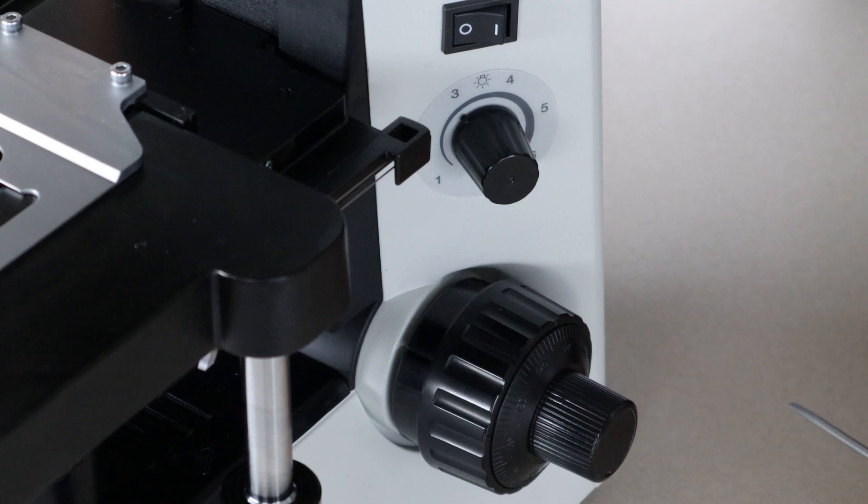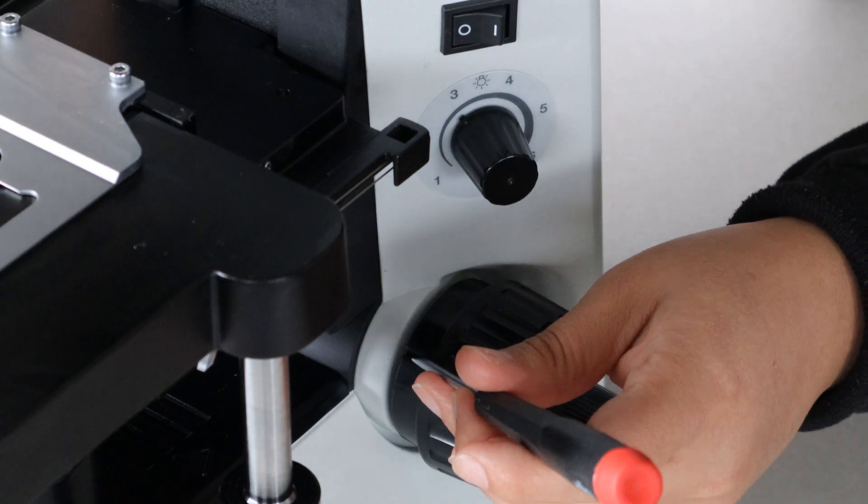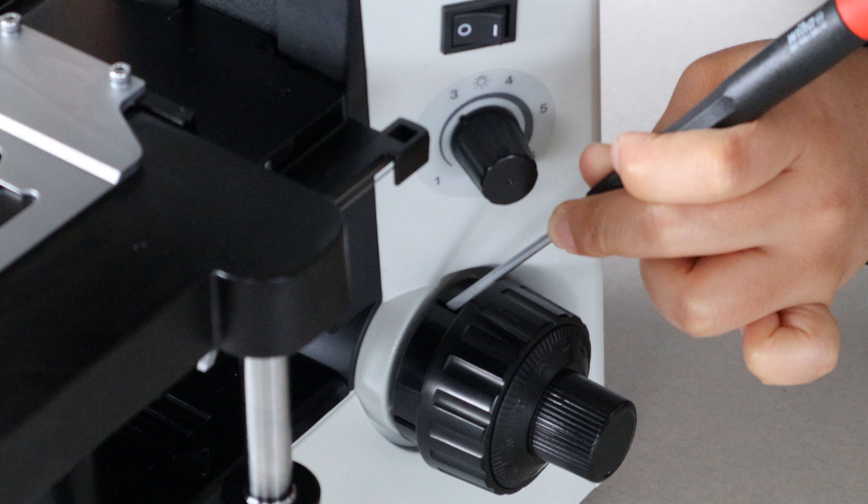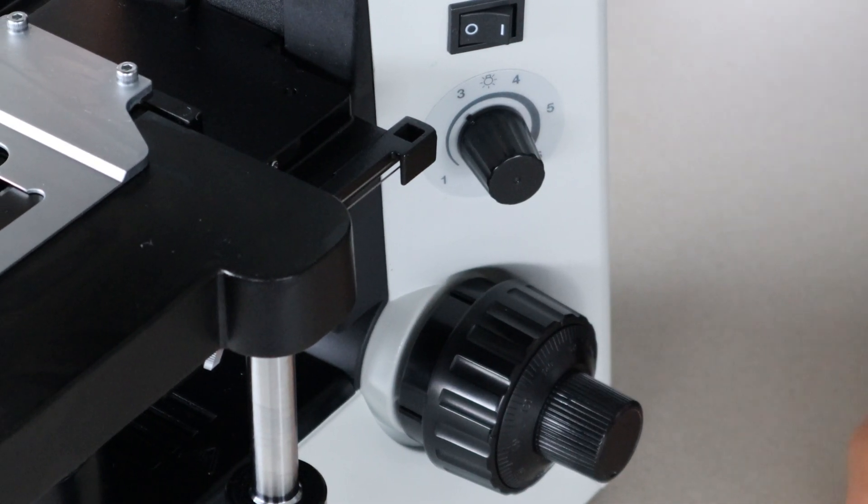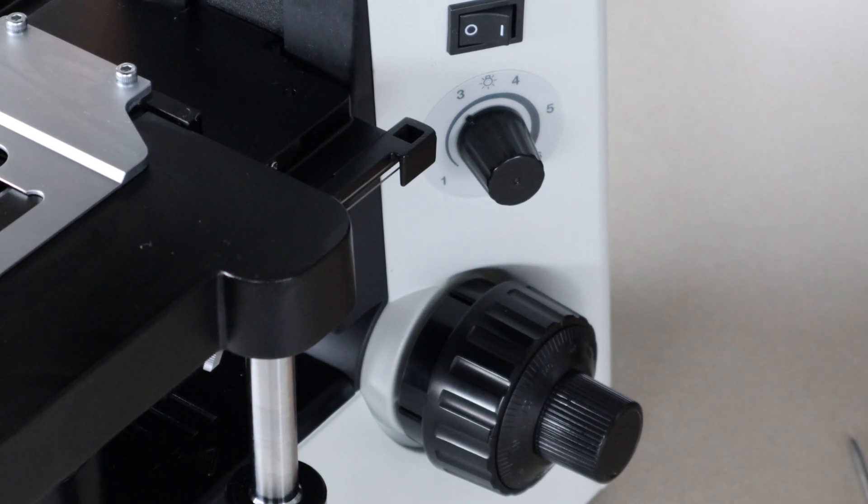And like we said, just an eighth to a quarter turn should be enough to get it to about where you want it. All right, and that was how you adjust the tension on your CX series microscope. If you have any questions, feel free to give us a shout. We're always happy to help. Thank you for watching.